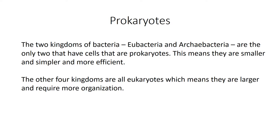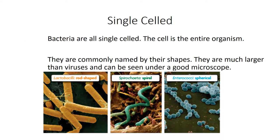In taxonomy, we use the terms prokaryote and eukaryote. The two kingdoms of bacteria — eubacteria and archaeobacteria — are the only two with prokaryotic cells, which are smaller, simpler, and more efficient. The other four kingdoms — fungi, protista, plant, and animal — have eukaryotic cells, which are larger and require more organization.